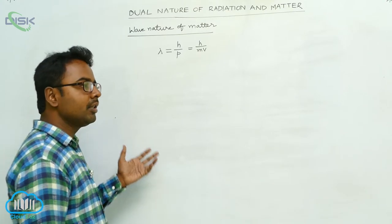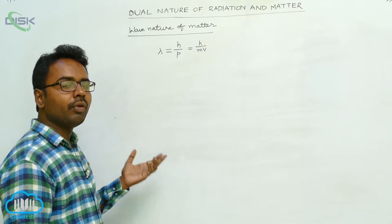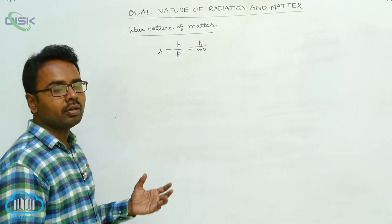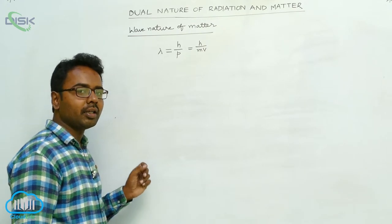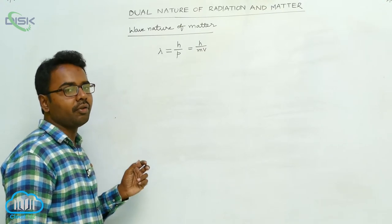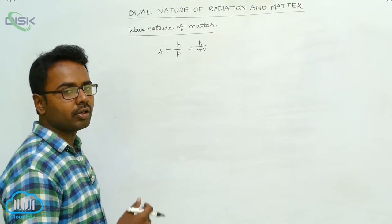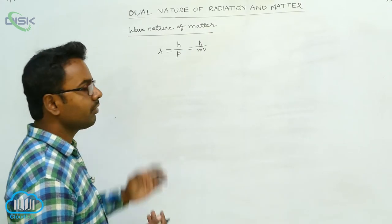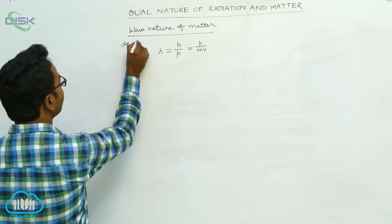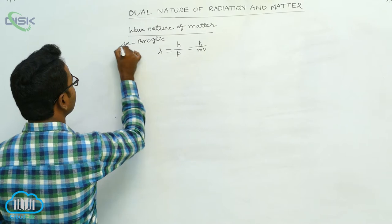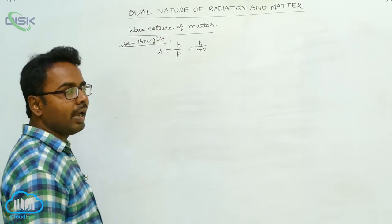We studied already in the previous lesson on atoms that the wave nature is exhibited by the electron when it is orbiting in a particular orbit. Elementary particles like electrons also exhibit wave nature, and these waves are called matter waves. The scientist De Broglie gave the relation for the wavelength of matter waves: lambda is equal to h by mv.